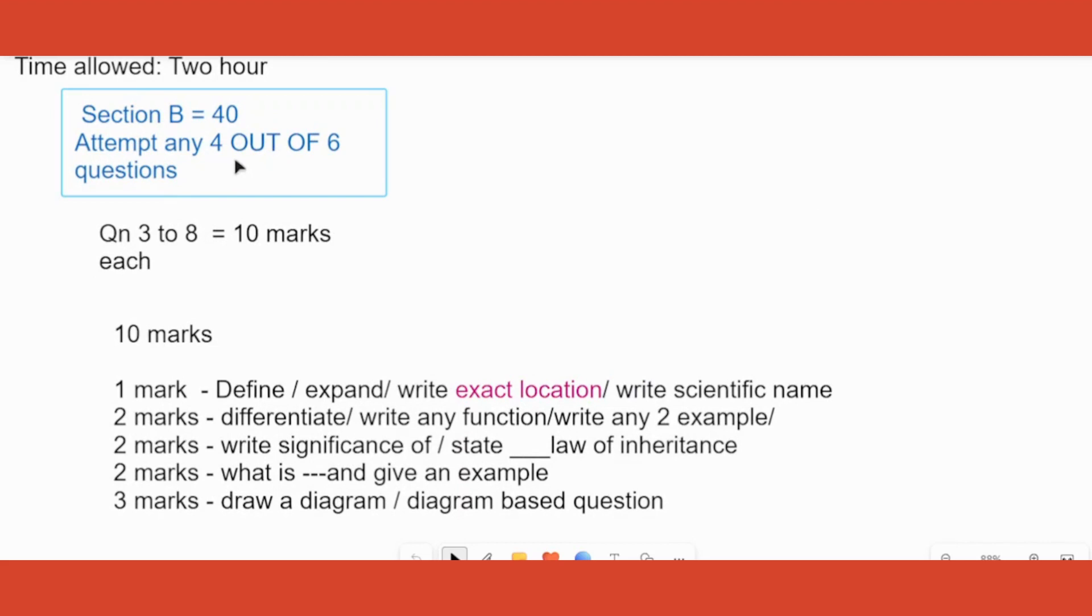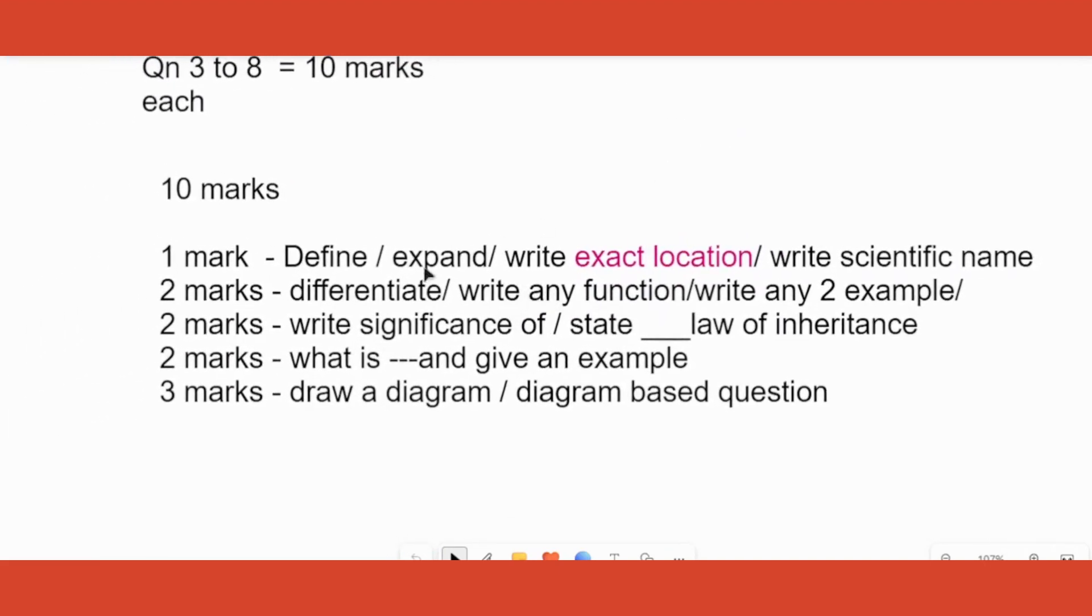The four questions that you have to write - each of the questions are 10 mark questions. It's not essay 10 mark question kind. This 10 marks is subdivided in this way: 1, 2, 2, 2, and 3 marker. What are the possible questions that can come for one mark? It could be define a particular term - transpiration, expand ATP, exact location of stomata, write the scientific name of mango, something like that can be given to you.